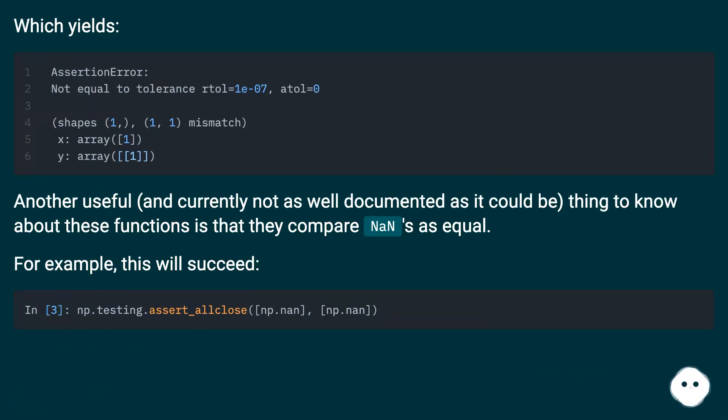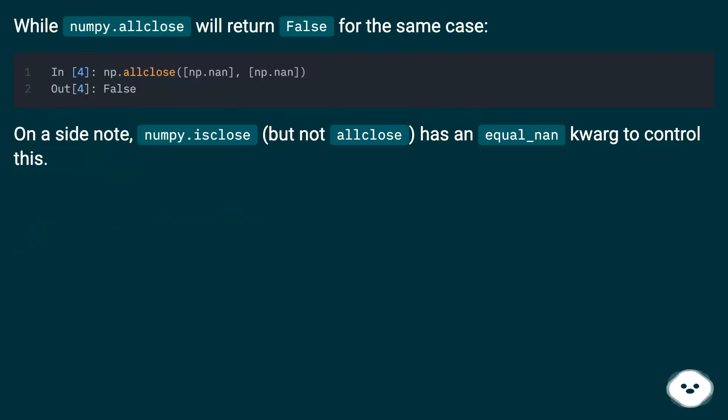Another useful, and currently not as well documented as it could be, thing to know about these functions is that they compare nans as equal. For example, this will succeed, while numpy.allclose will return false for the same case.